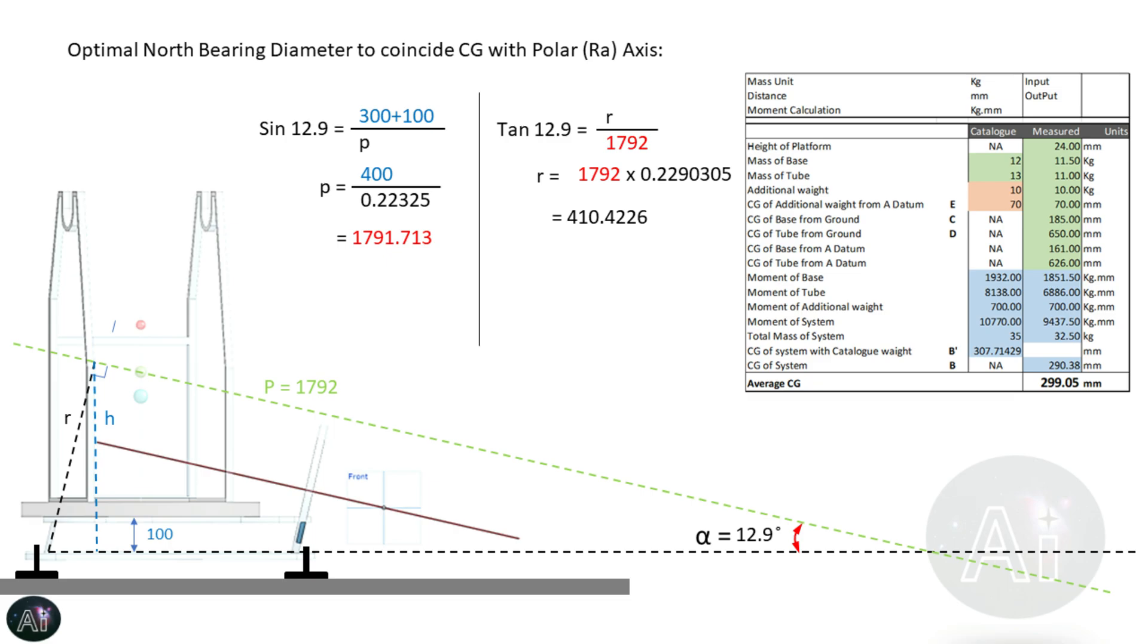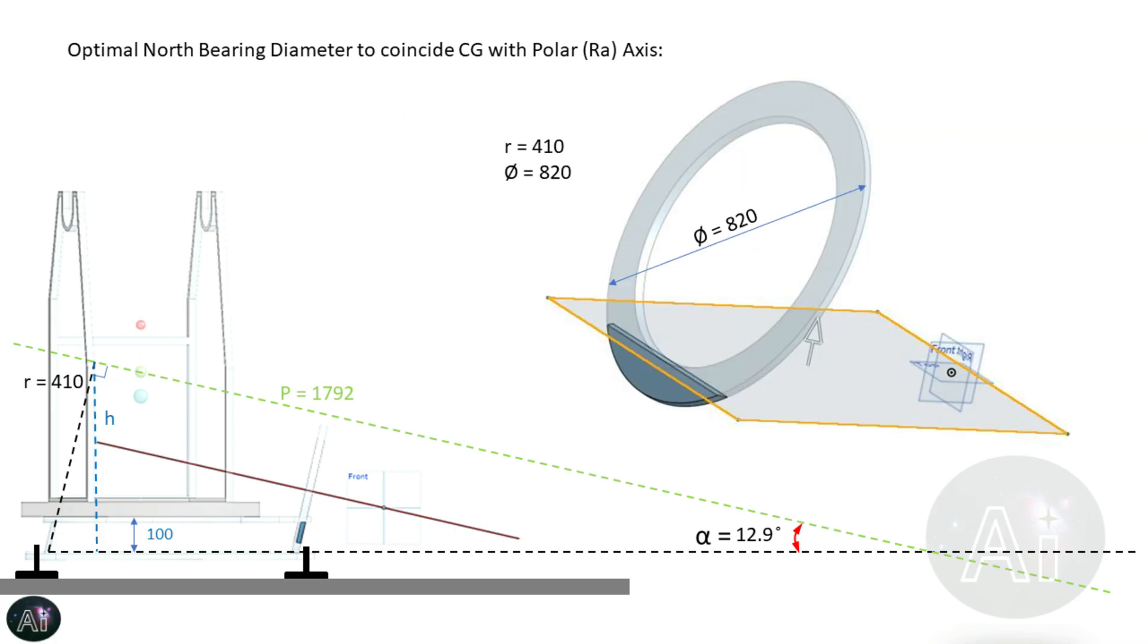Now substituting P in the formula let's calculate R and we have got 410 millimeters as the radius of north bearing. Please note we have rounded it off. Here is the depiction of what is the right diameter, which is two times the radius, for the north bearing if the center of gravity has to pass through the polar axis.